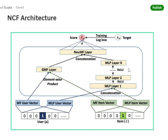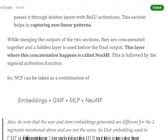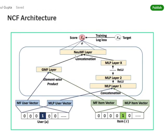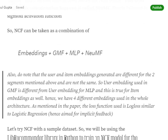Once we get outputs from the GMF layer and the MLP architecture, we again concatenate the two outputs into the NeuMF layer, followed by a sigmoid activation function to get our final score. Training uses a log loss function, similar to logistic regression. To summarize, NCF is a combination of: embedding layers generating four embeddings; GMF, a generalized version of matrix factorization; MLP, a general deep neural network; and a NeuMF layer where the outputs from GMF and MLP are merged.